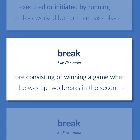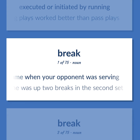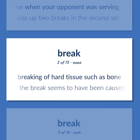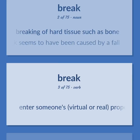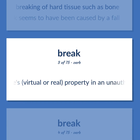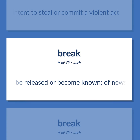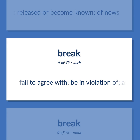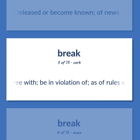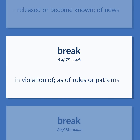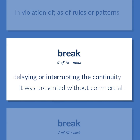Break. Tennis: a score consisting of winning a game when your opponent was serving — he was up two breaks in the second set. Breaking of hard tissue such as bone — the break seems to have been caused by a fall. Enter someone's virtual or real property in an unauthorized manner, usually with the intent to steal or commit a violent act. Be released or become known, of news. Fail to agree with; be in violation of, as of rules or patterns. An act of delaying or interrupting the continuity — it was presented without commercial breaks.